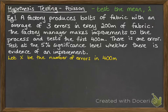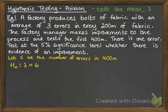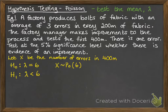We state our variable: X is the number of errors found in 400 metres. Our null hypothesis is that lambda equals 6, since we've doubled the length of fabric we're looking at, we double the mean as well — three errors in 200 metres means six in 400 metres, if nothing has changed. So X follows a Poisson distribution with lambda 6. Our alternative hypothesis is that lambda is less than 6. We're doing a one-tailed test because the factory manager claims he's made improvements — not just a change, but actually fewer errors.